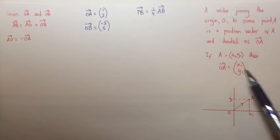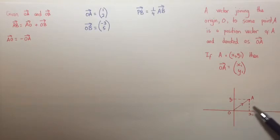This simply means that if a point A is (x1, y1) as shown here, then the vector OA is simply denoted by a 2 by 1 column matrix (x1, y1).